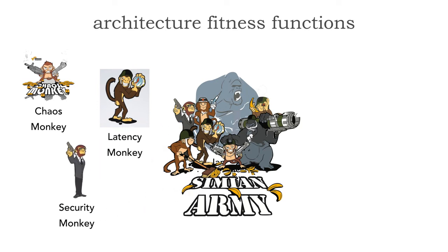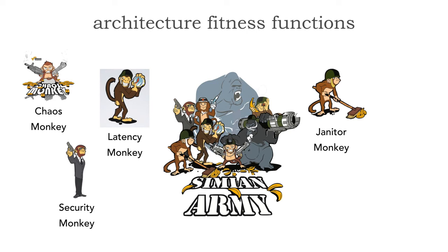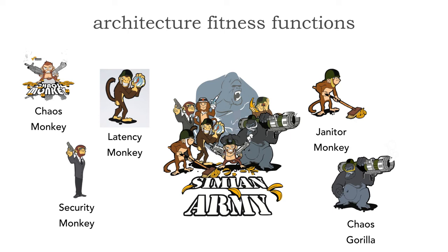Security Monkey is another great fitness function. It not only looks for holes and tries to penetrate different servers, but also looks for expired certificates — something we sometimes forget about. Janitor Monkey looks for resources that haven't been used much, puts them on watch, and if unused, deems them inactive and starts destroying services just taking up space and resources. Chaos Gorilla takes down an availability region to test failover in production. And the biggest member, Chaos Kong, takes down an entire availability center.